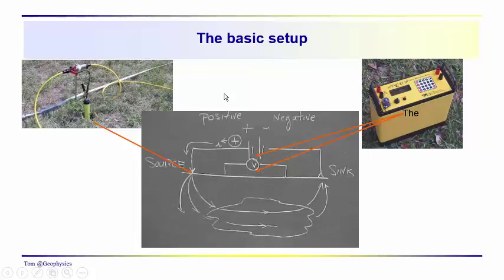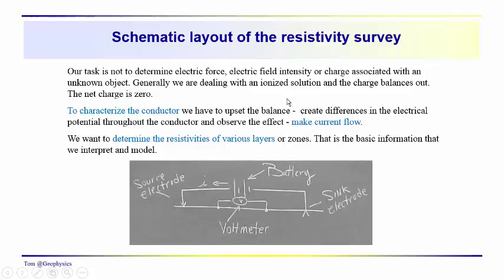It's a nice system. Once you get it set up and ready to go, you can push the button, it'll do its work, and then you get a nice plot at the end of the session. We're dealing with ionized solutions most likely in subsurface intervals, and we're just trying to upset the balance — to create current flow — so we can determine the resistivities of various layers by looking at how potential differences vary from point to point along the surface.